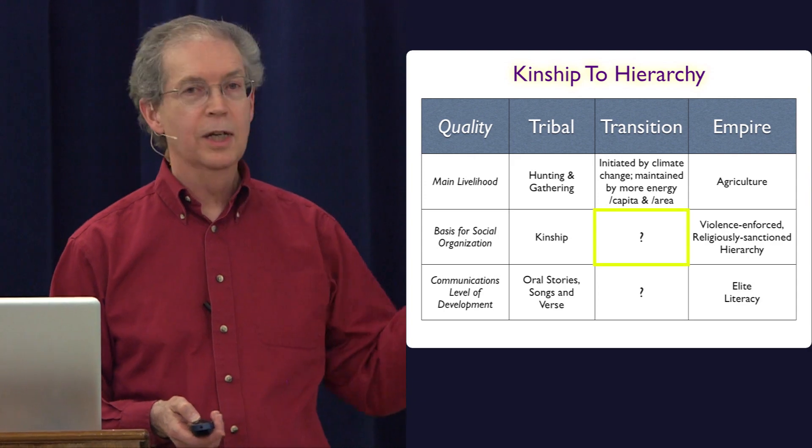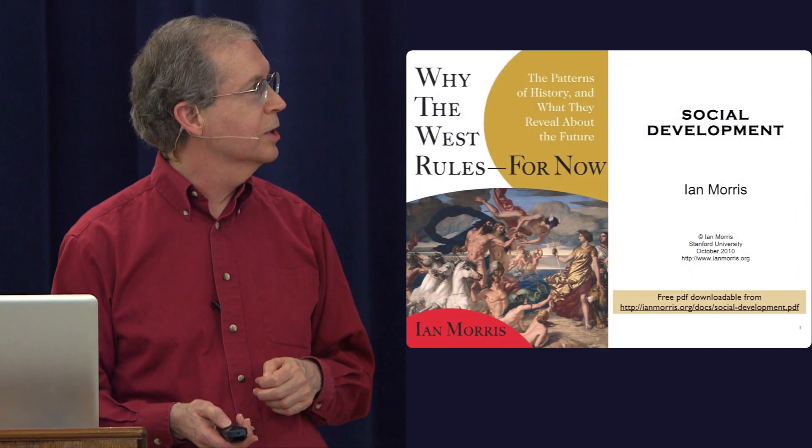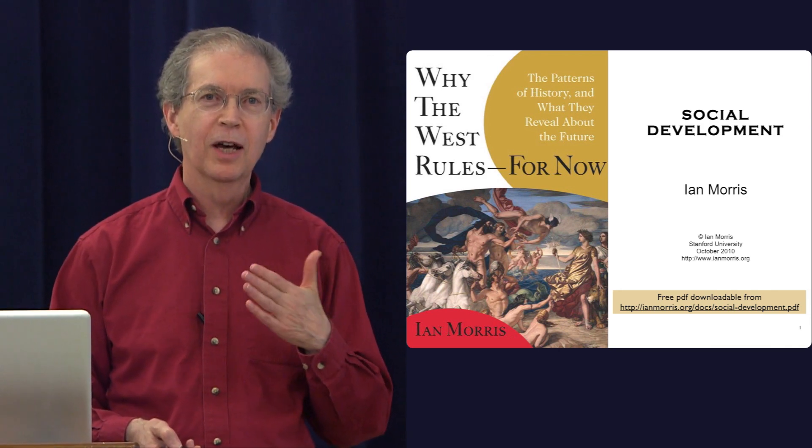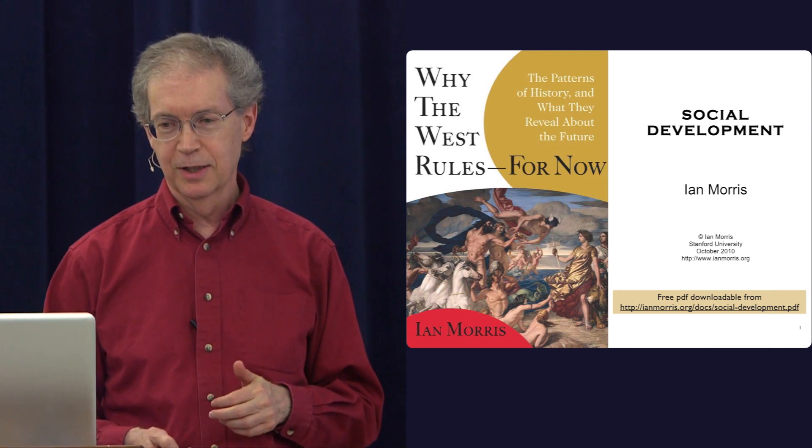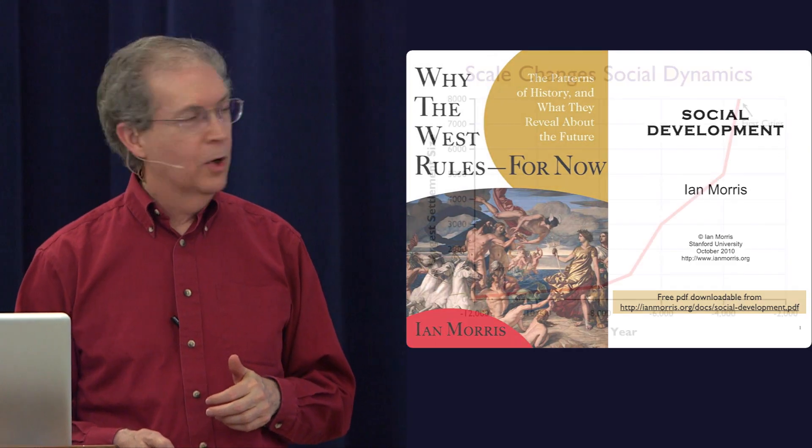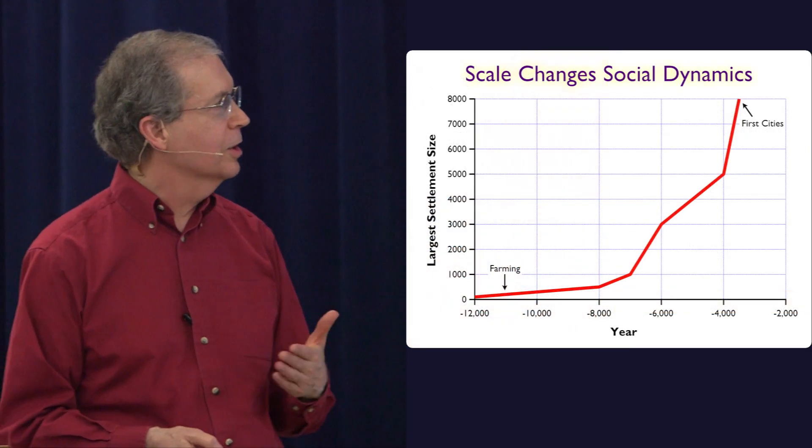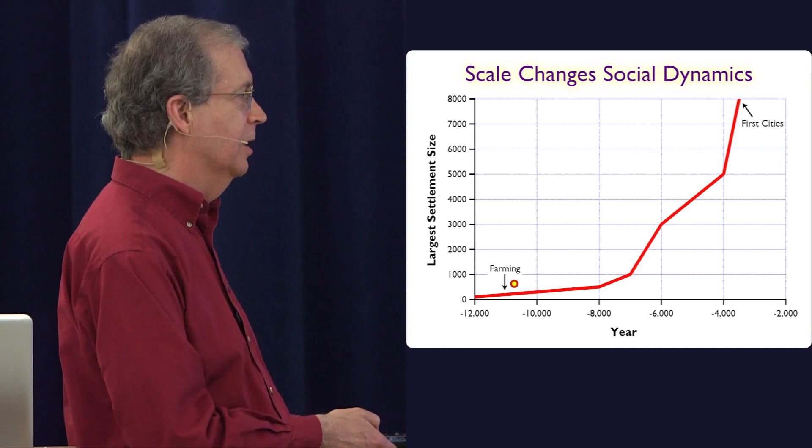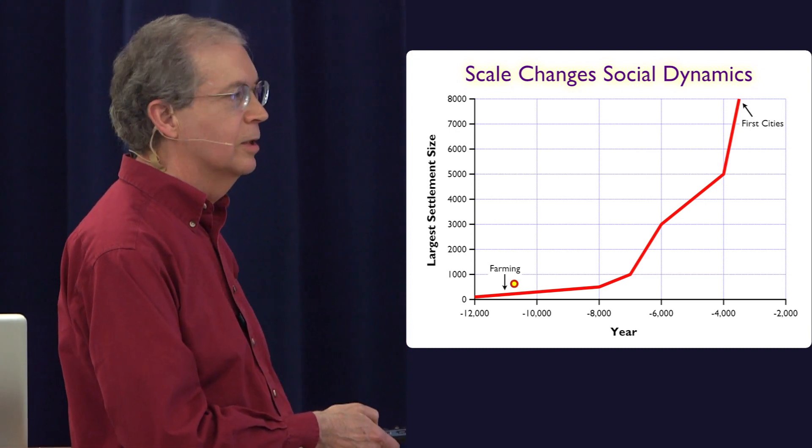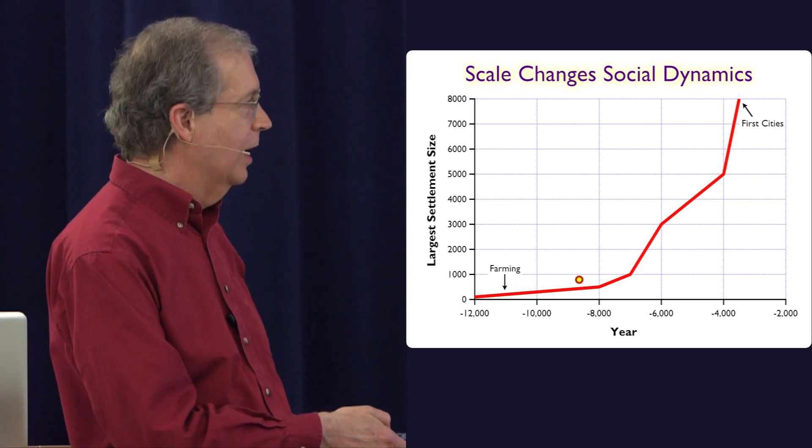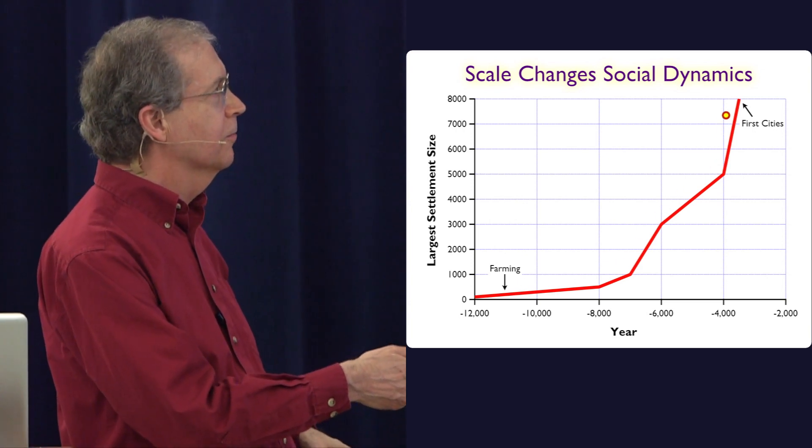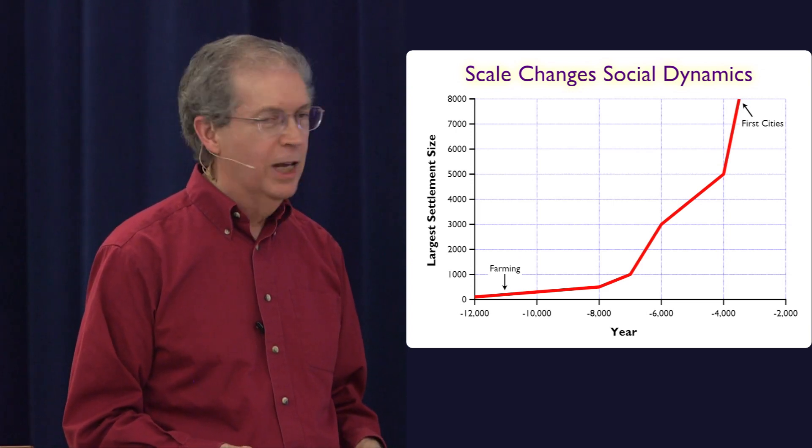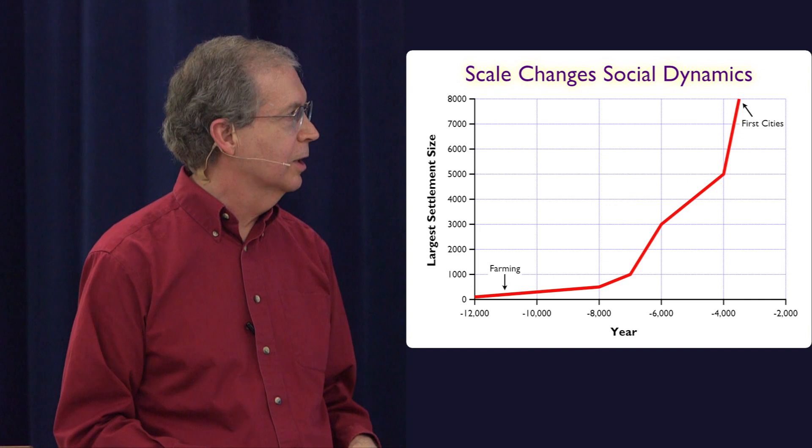Social organization, and here I'm going to draw on another historian, Ian Morris. His social development index went back and researched a whole lot of really interesting cultural things. One of them was to look at what's the largest settlement size as time moves along. And with the first farming, it was way down here, just a few hundred in the settlements. And it gradually grew and grew up to the first cities, which were around 8,000 people or so. But something happens to the social dynamics along here.